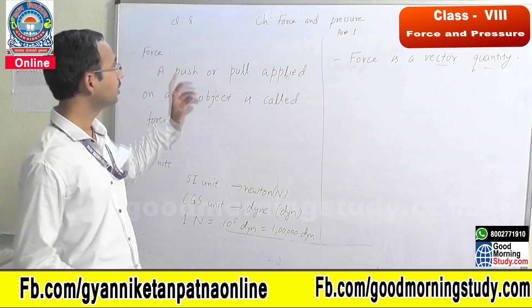Now let us study about the units of force. Its SI unit is Newton, named after the scientist, and its symbol is the capital letter N. The CGS unit, the smaller unit, is Dyne, with symbol DYN. The relation between Newton and Dyne: one Newton is equal to 10 to the power 5 Dyne, that is 1 lakh Dyne. So these are the two units of force and the relation between them.